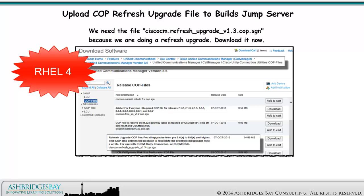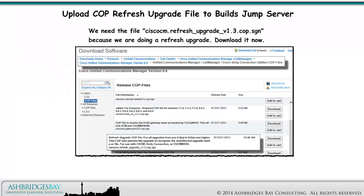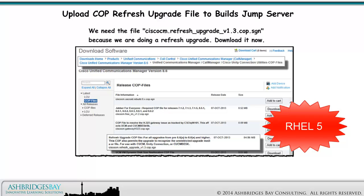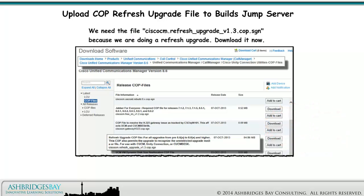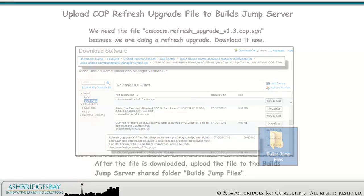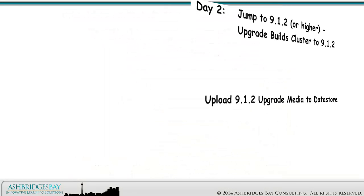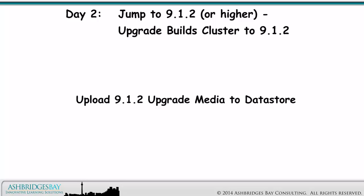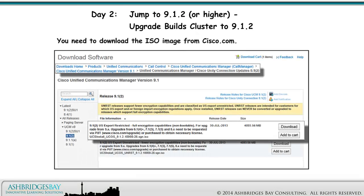For CUCM before version 8.6, RHEL 4 is used, while from 8.6 up to 9.x, RHEL 5 is used. RHEL 6 is used for version 10.x. Download the file now. After the file is downloaded, upload it to the BuildsJump server shared folder — BuildsJump files. You will also need to upload the 9.1.2 upgrade media to the Datastore and download the ISO image from cisco.com.